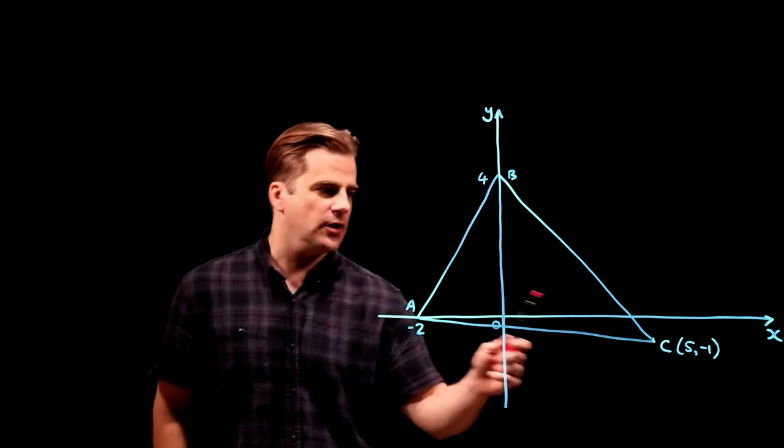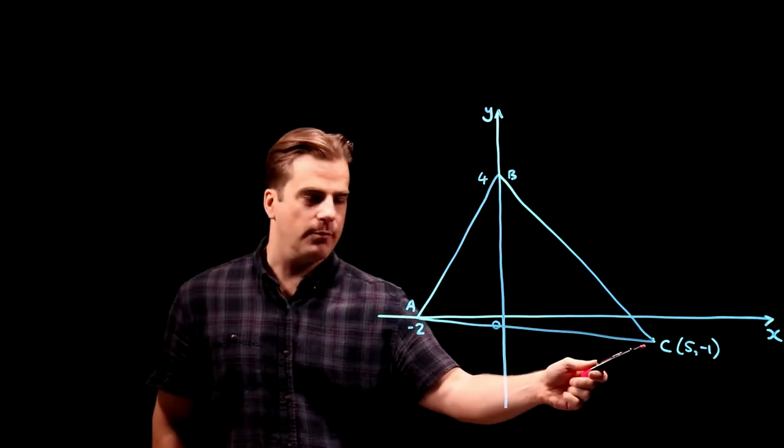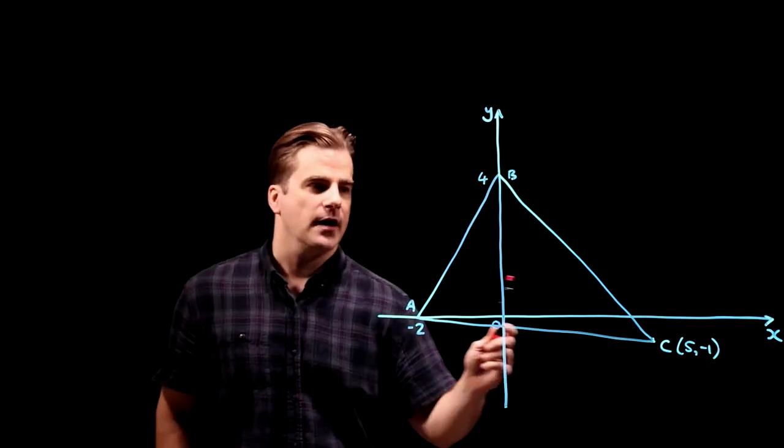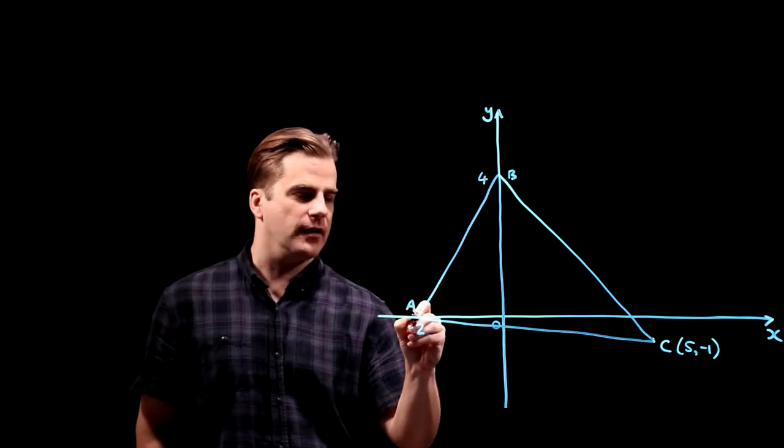Right, we've got to find the equation of the line that goes through the point C and is perpendicular to the line AB.